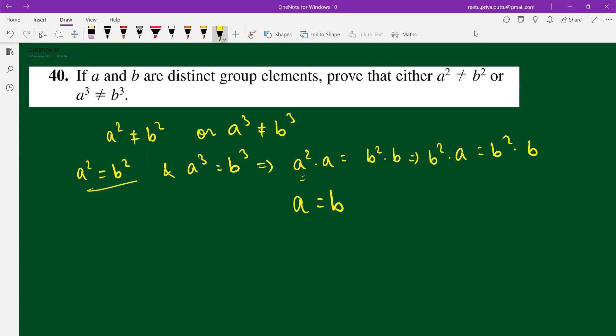But we have given that a and b are distinct group elements. So this is not possible as we have arrived at a contradiction.